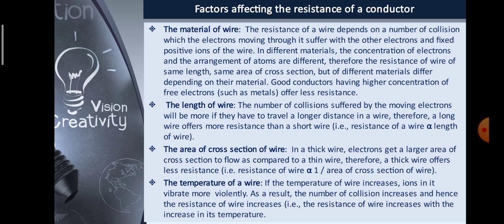Factors affecting the resistance of a conductor. The first factor is the material of the wire. The resistance of a wire depends on the number of collisions which the electrons suffer with other electrons and fixed positive ions. In different materials, the concentration of electrons and the arrangement of atoms are different. Therefore, the resistance of wires of the same length and same area of cross-section but of different materials will differ depending on their material. Good conductors with higher concentration of free electrons, such as metals, offer less resistance. The second factor is the length of the wire. The number of collisions suffered by moving electrons will be more if they travel a longer distance, so a long wire offers more resistance than a short wire — that is, resistance of a wire is proportional to its length.